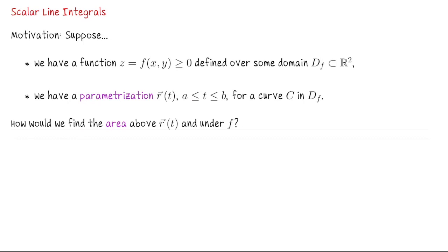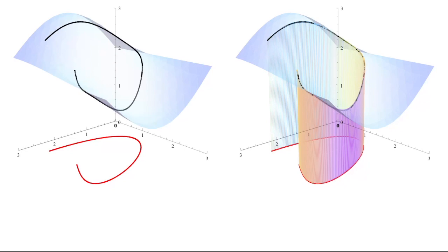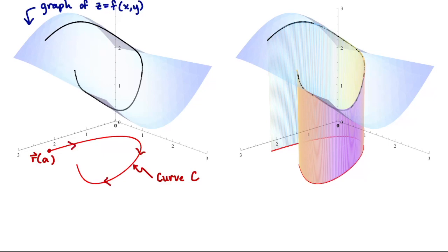How could we find the area above the curve and under f? Here's what I mean by that question. Suppose this curvy sheet of paper I have graphed here is the graph of z equals f of x and y. So assuming we have a nice continuous function, this graph is a surface in R3. Next suppose this red curve I've graphed in what looks like the xy plane inside of R3 is the curve C, going from this point r of a to this point r of b. If I compute the composition f of r of t, that would give me the subset of my graph of z equals f of x and y pictured by this black curve here.